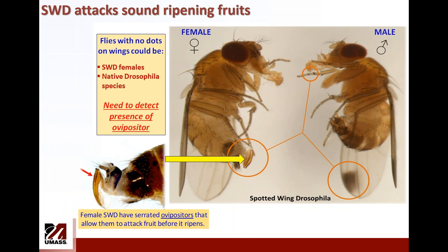Females have the ability to pierce the skin of fruit using what is called a serrated ovipositor — the egg-laying structure. When you're monitoring for this pest, you can identify the males by the presence of one spot on each wing. The absence of such a dot means the fly could be either a spotted wing drosophila female, which lacks the wing spot, or a different native drosophila species, so you have to look at that carefully.